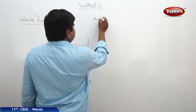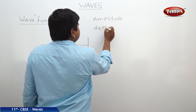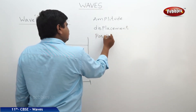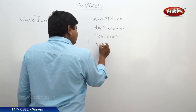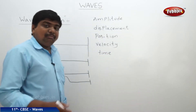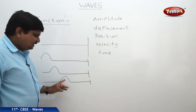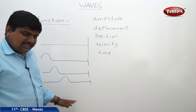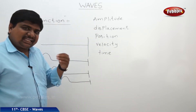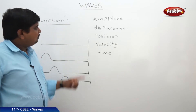These physical quantities include amplitude, displacement, position, velocity, time, and many more. So, if you want to describe the motion of the wave pattern along the string, it should be associated with these physical quantities. Whenever these physical quantities are expressed in a mathematical form to describe the motion of a wave, it is called a wave function.